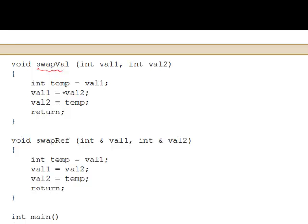We create inside the function a temporary int that we assign val1 to. We assign val2 to val1, we assign temp to val2, and we return.